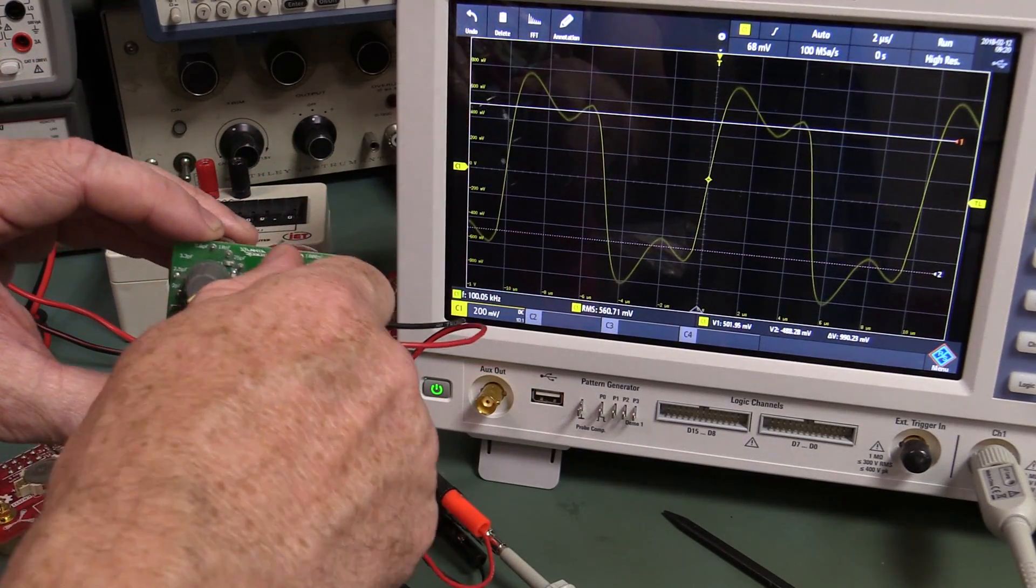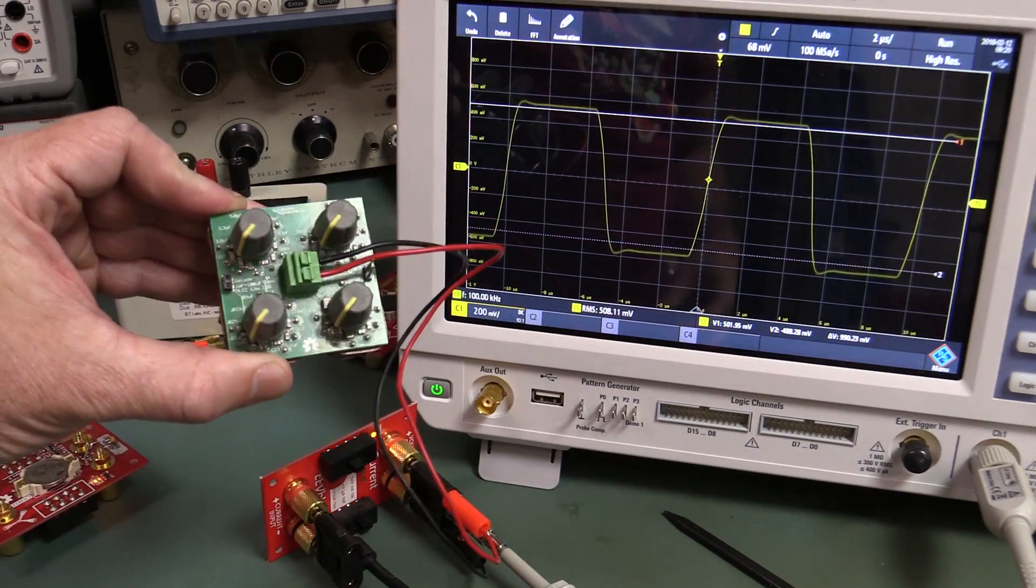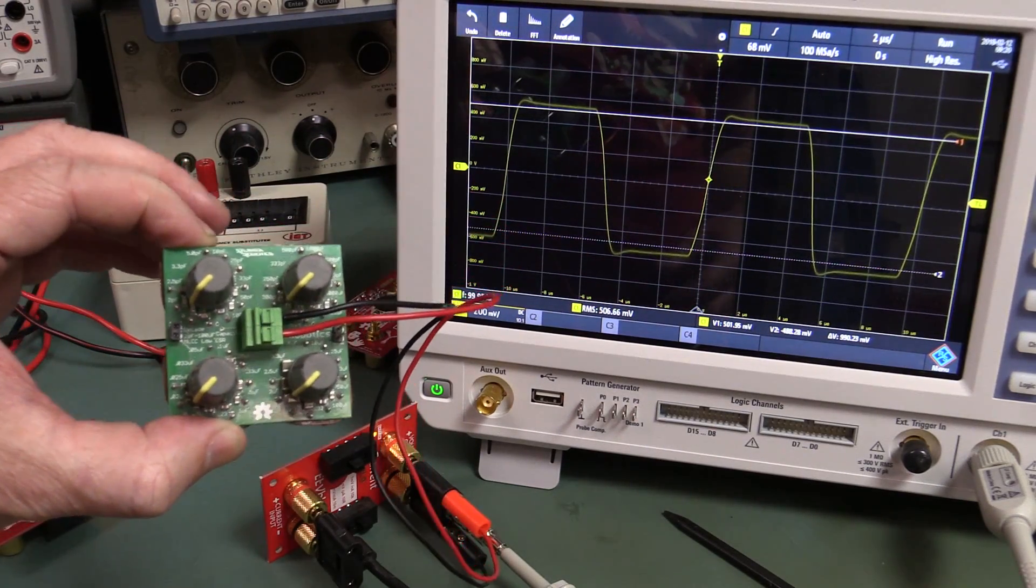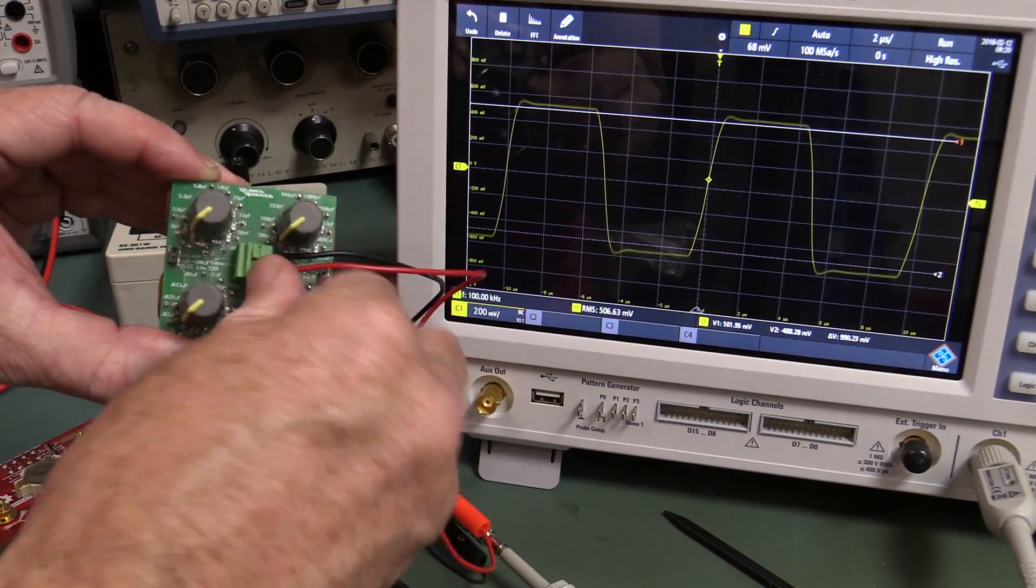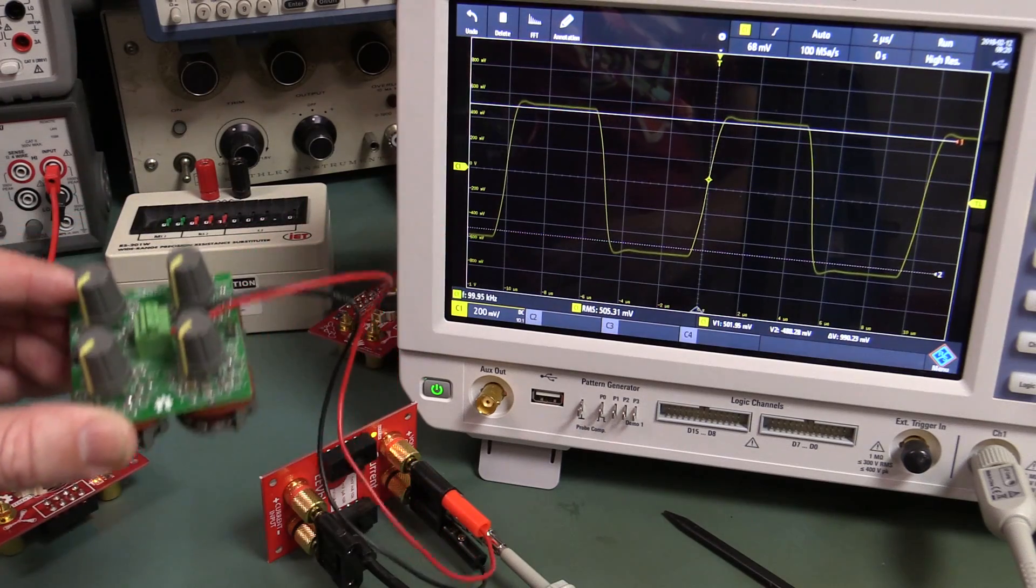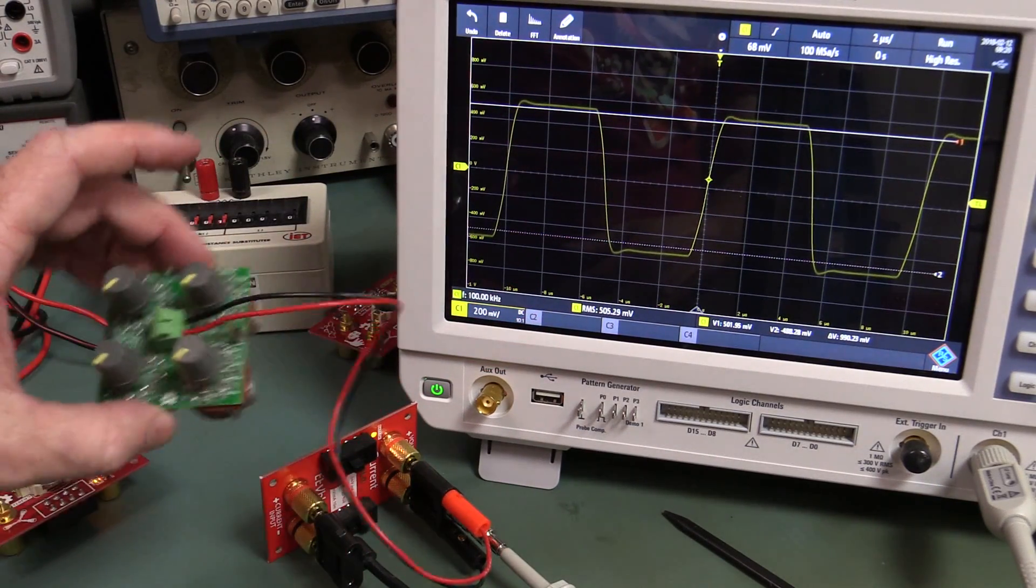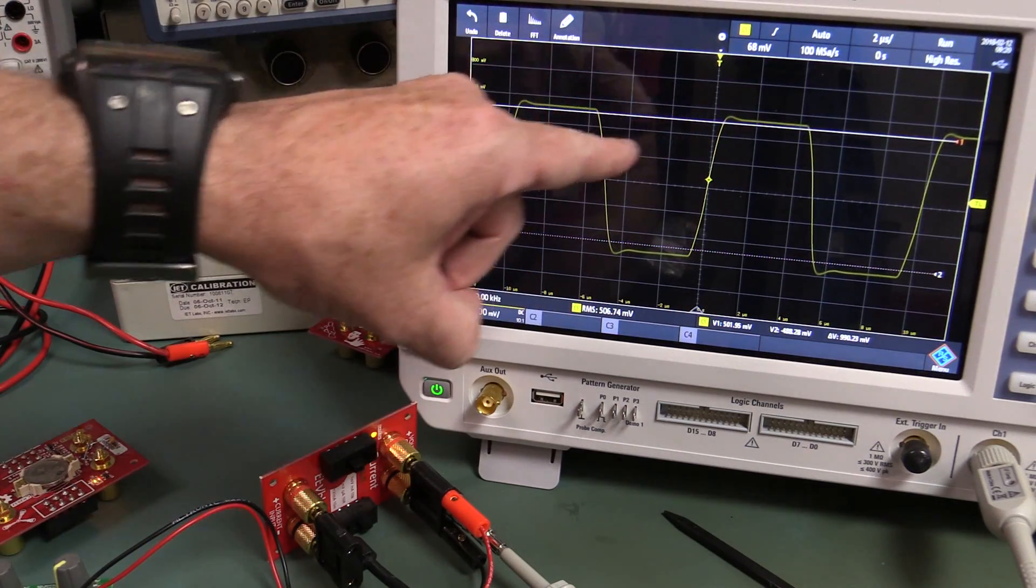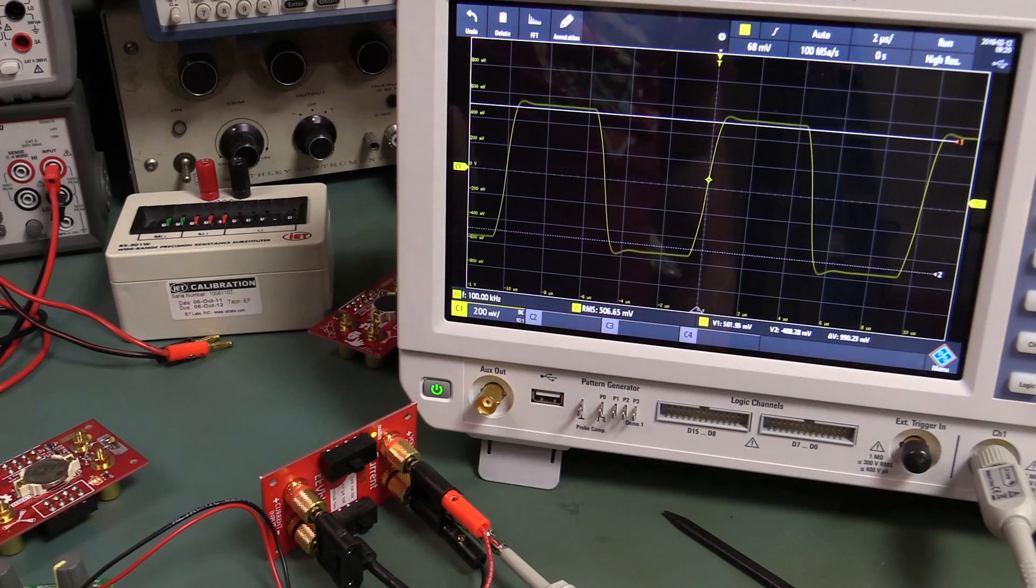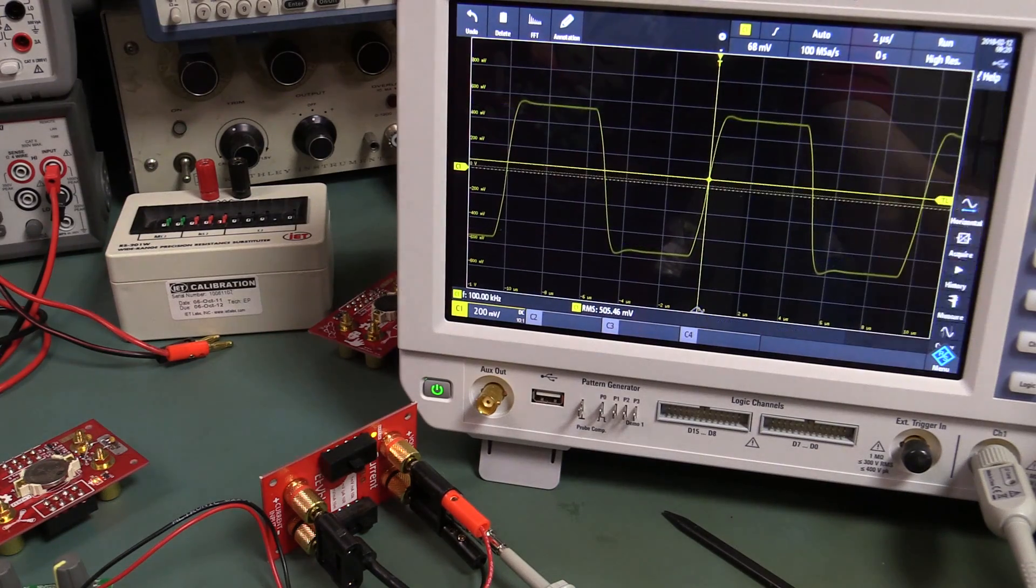You might think that, aha, that is a solution, and in theory that is a better solution than what we've got before. But look at this. I've got this connected to zero, so there's zero capacitance, just the stray capacitance of the wire and the circuit board on the output, and we do have some overshoot on there. You can see that. We've got some overshoot and undershoot.